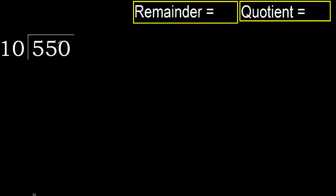550 divided by 10. 5 is less, therefore next. 55 is not less, therefore with 55.